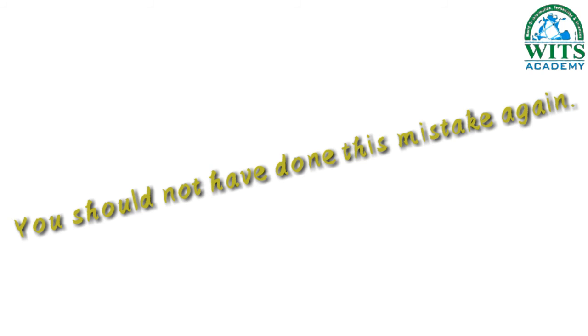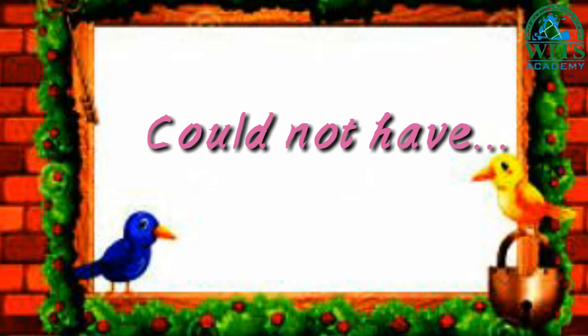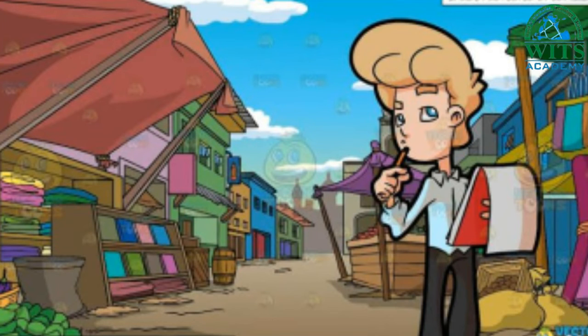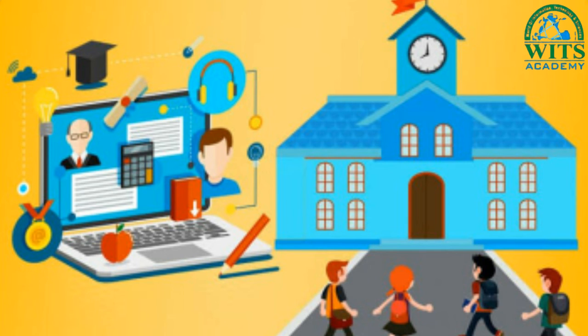Another example: you should not have done this mistake again. Now come to 'could not have.' Sentence structure: subject plus could plus not plus have plus verb third form plus object. For example: I could not have gone to the market. You could not have called her. He could not have studied there.